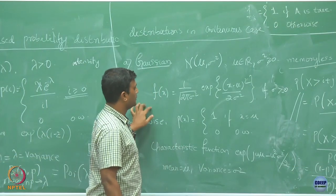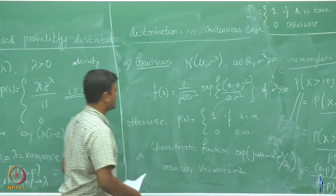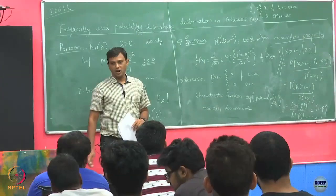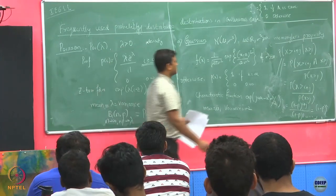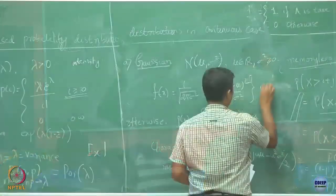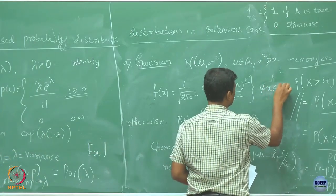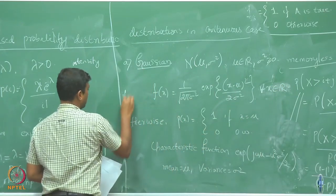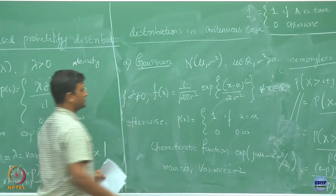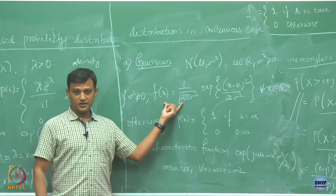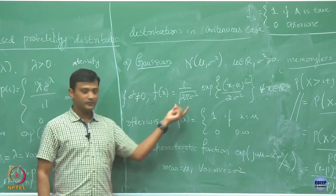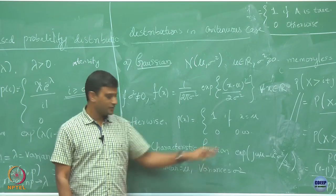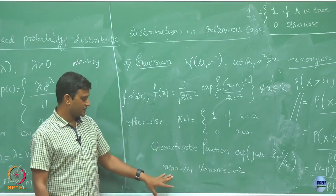Looking at this PDF, it is valid for all x belonging to the reals. If sigma square is not equal to 0, the CDF is defined for all x. If sigma square is 0, it takes the degenerate format, and its characteristic function is given accordingly.